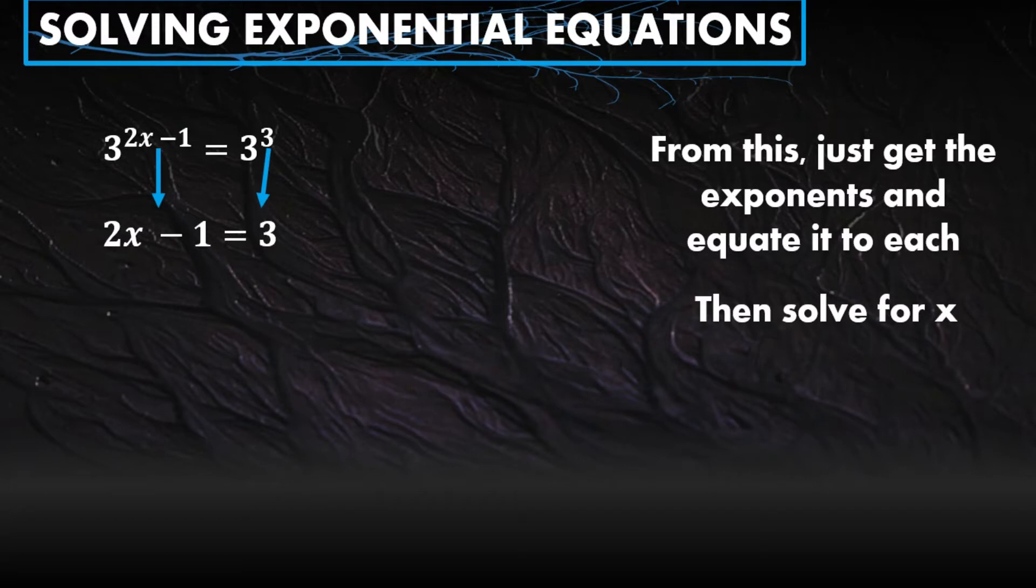So 2x minus 1 equals 3. After that, solve for x. Again, when we say solve for x, make x alone on one side of the equation. It shouldn't have anything with it. How do we do that? Transpose the negative 1, so it becomes plus 1. After that, simplify. We have 2x equals 4. Then divide both sides by 2. Cancel the 2 here and we get x equals 2.